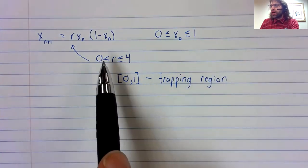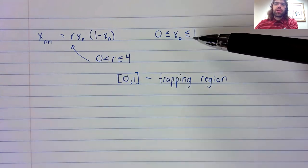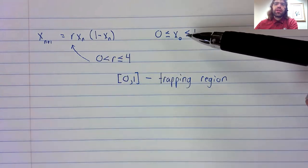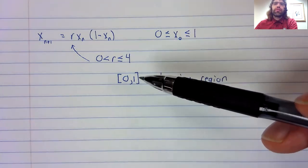As long as r is between zero and four, then x sub zero being in here ensures that we are in here forever.